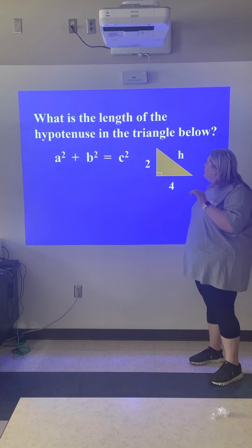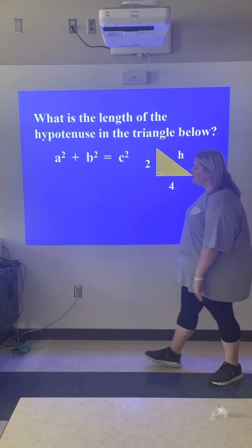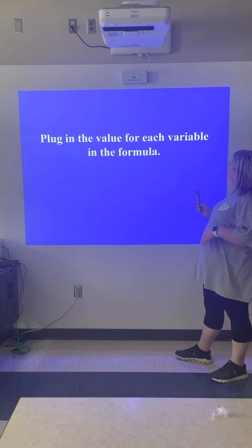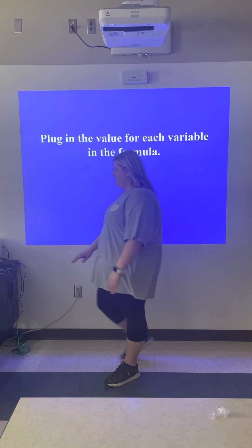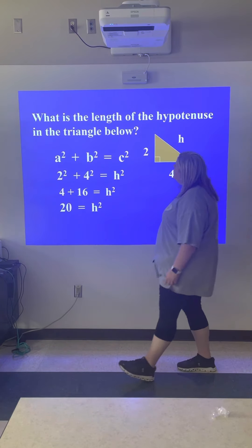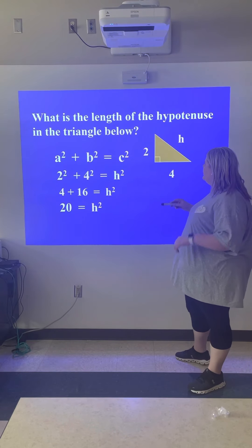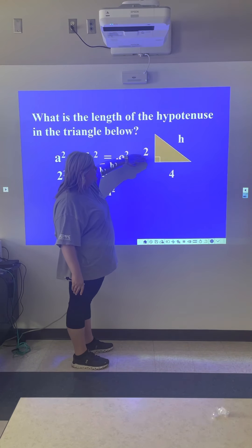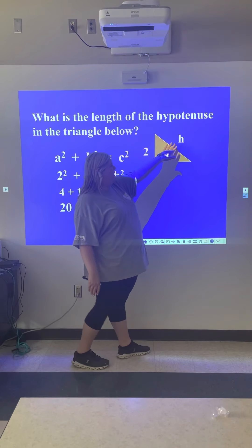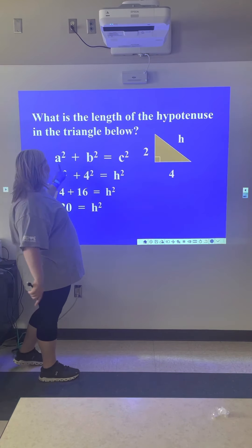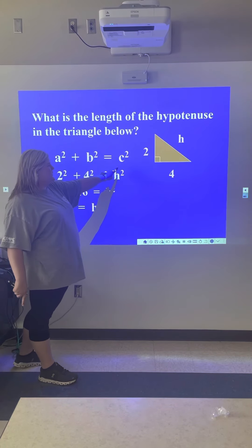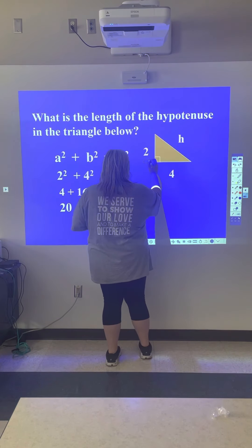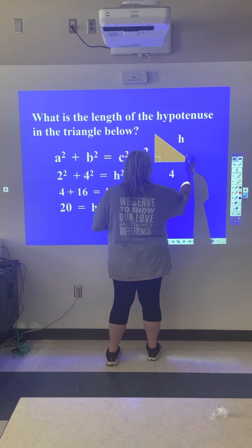Here's the first example: what is the length of the hypotenuse in the triangle below? We have a right triangle where one leg is 2, one leg is 4, and we're looking for the hypotenuse. Our formula is a squared plus b squared equals c squared. This leg is a, this leg is b, and this slant is c.